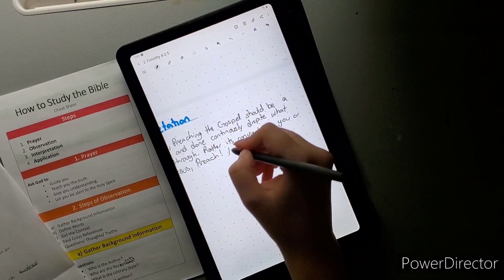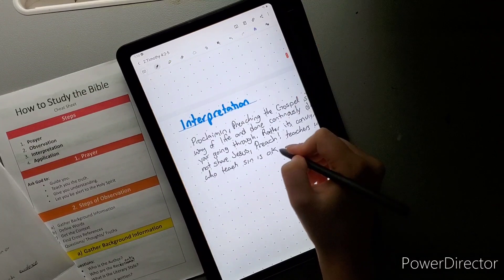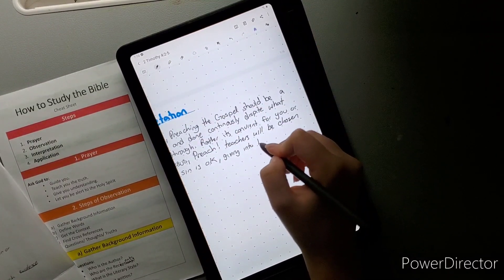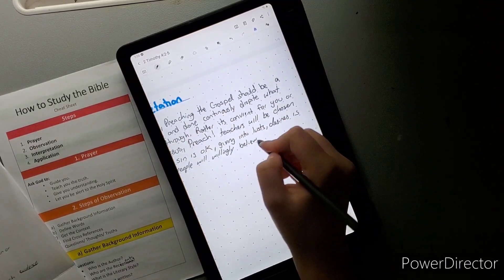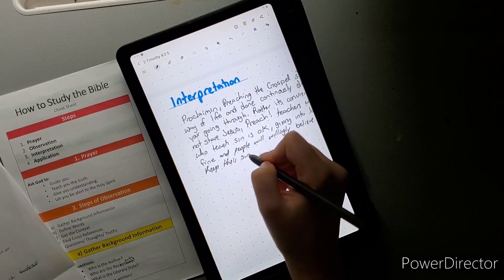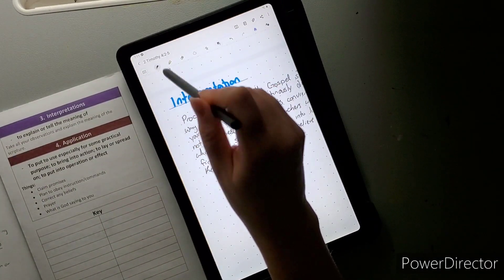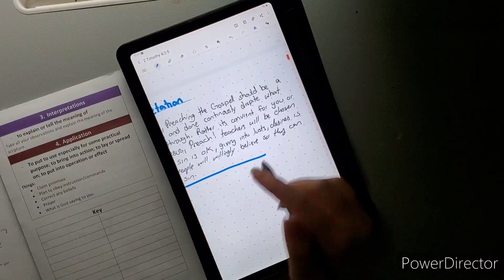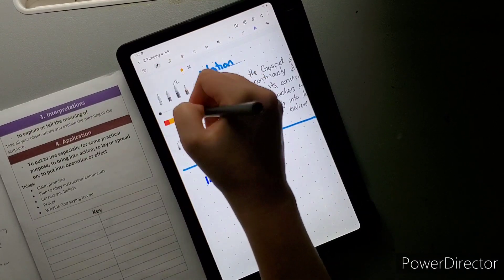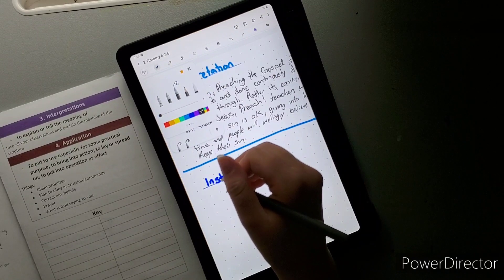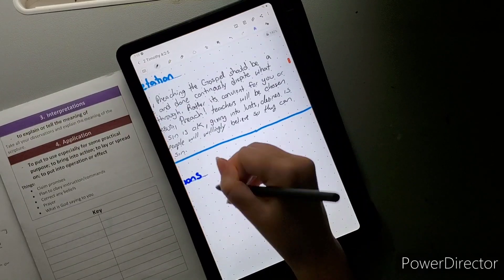The next thing is application. Application has a few steps. Instructions that I get from these is basically verses two and five, which is preach the word, reprove, rebuke, watch out, endure, do the work of evangelist. Prayer that I have is help me to preach in all seasons and to do all my duties as your servant in Jesus name. I'm pretty short and to the point when it comes to prayer. I think God gets me.